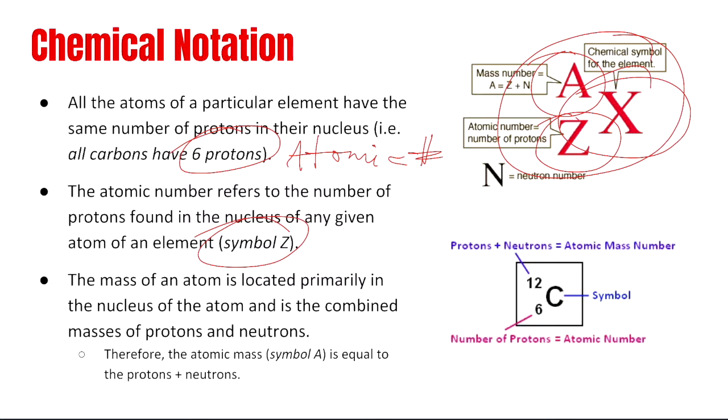The mass of an atom is located primarily in the nucleus of an atom, and it's the combined masses of the protons and neutrons. So combine the protons and neutrons, or take the mass of an atom, subtract it by the atomic number, and it will give you the number of neutrons. Keep in mind that for the mass, you want to round the mass to the nearest whole number.